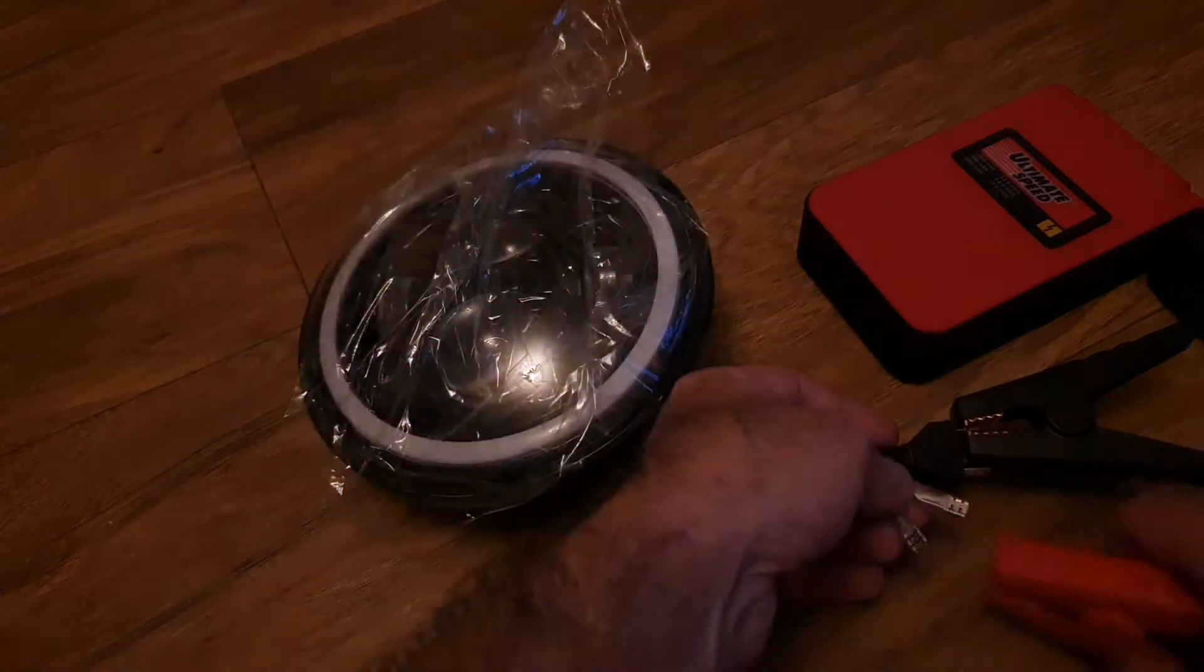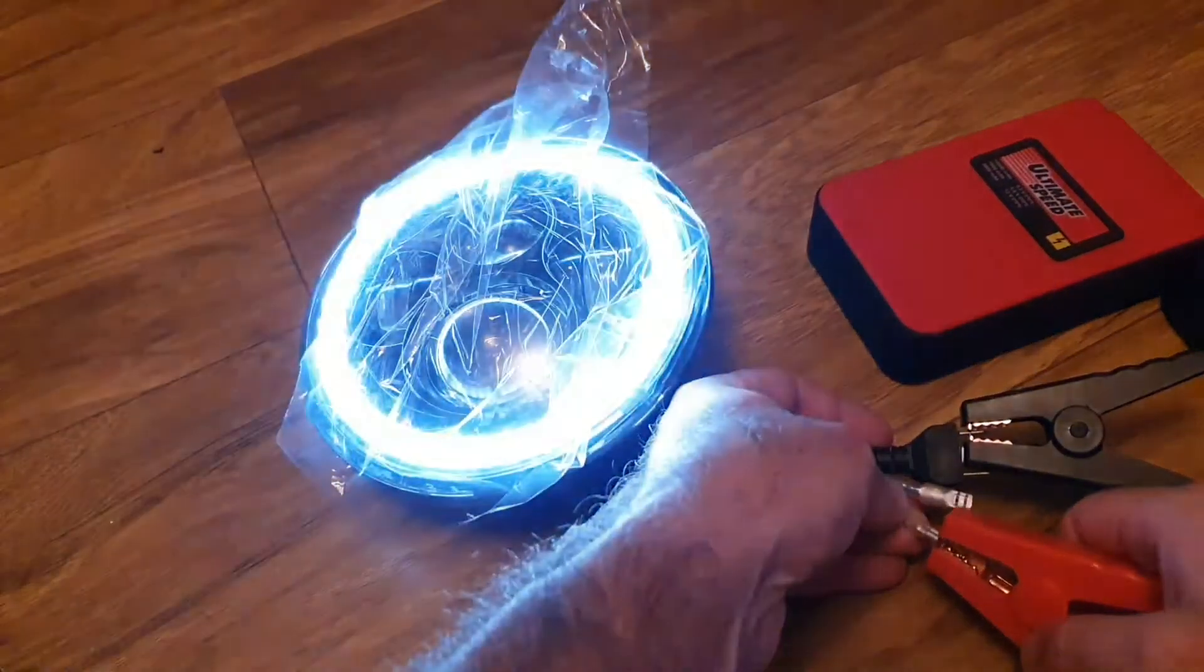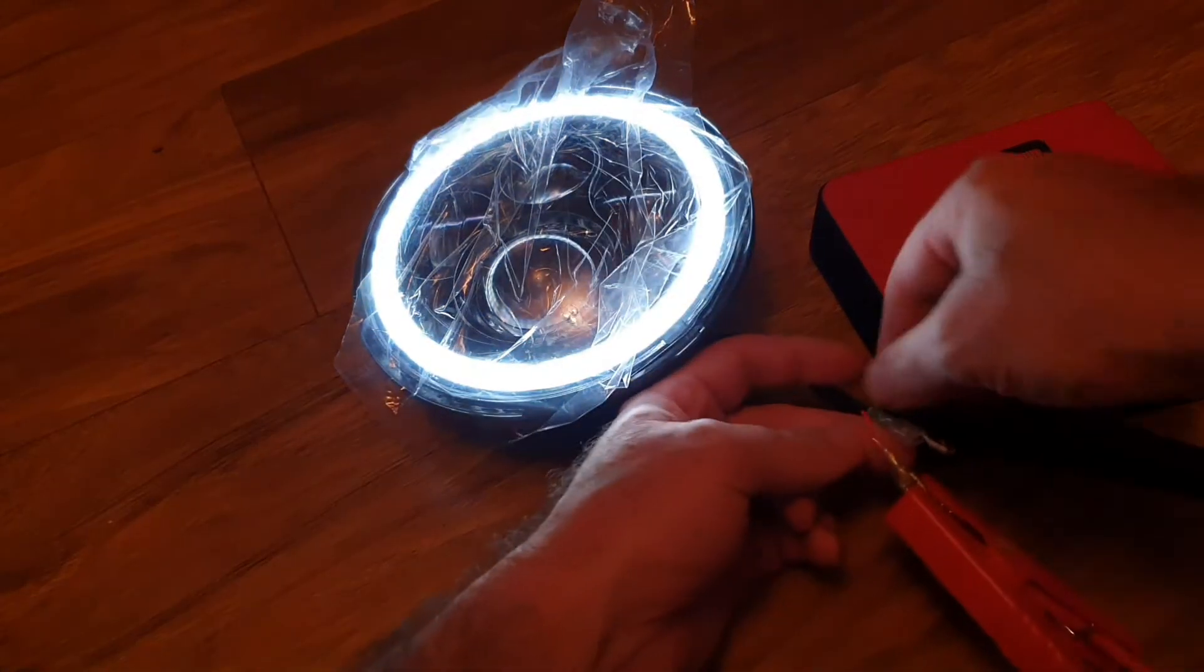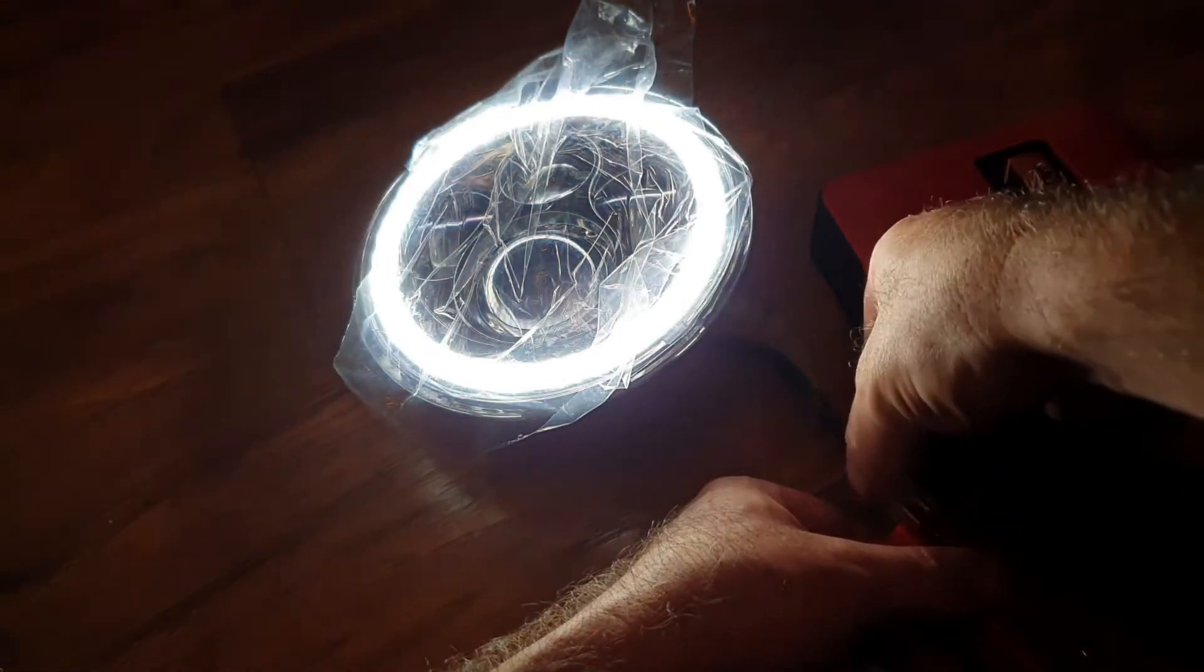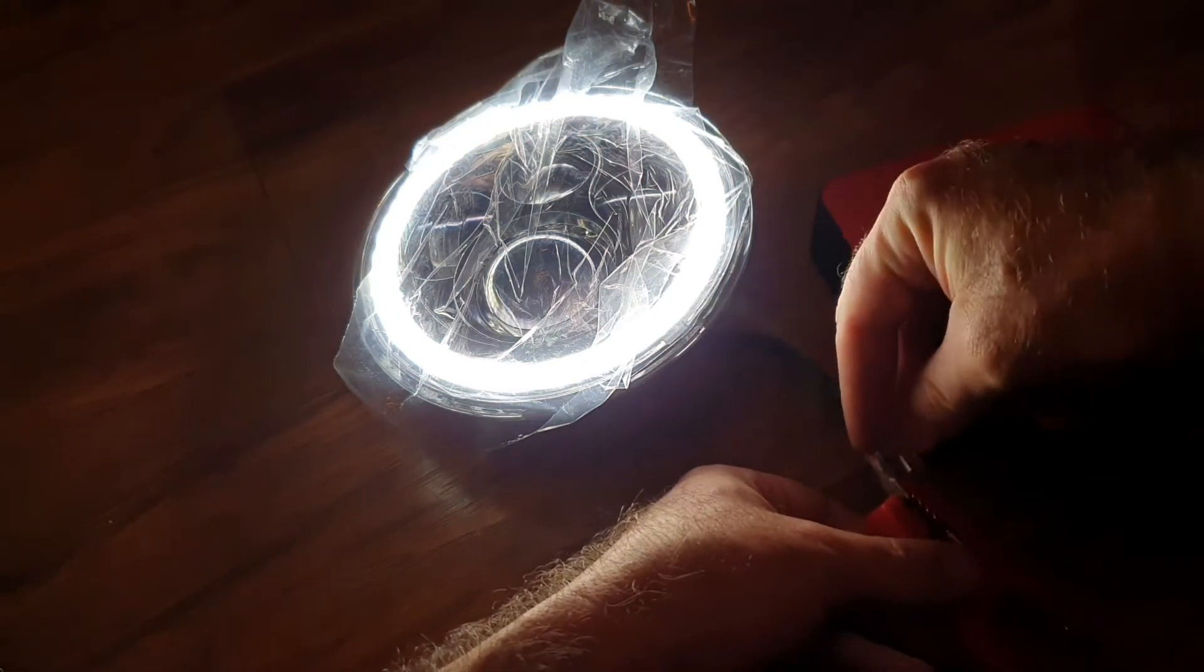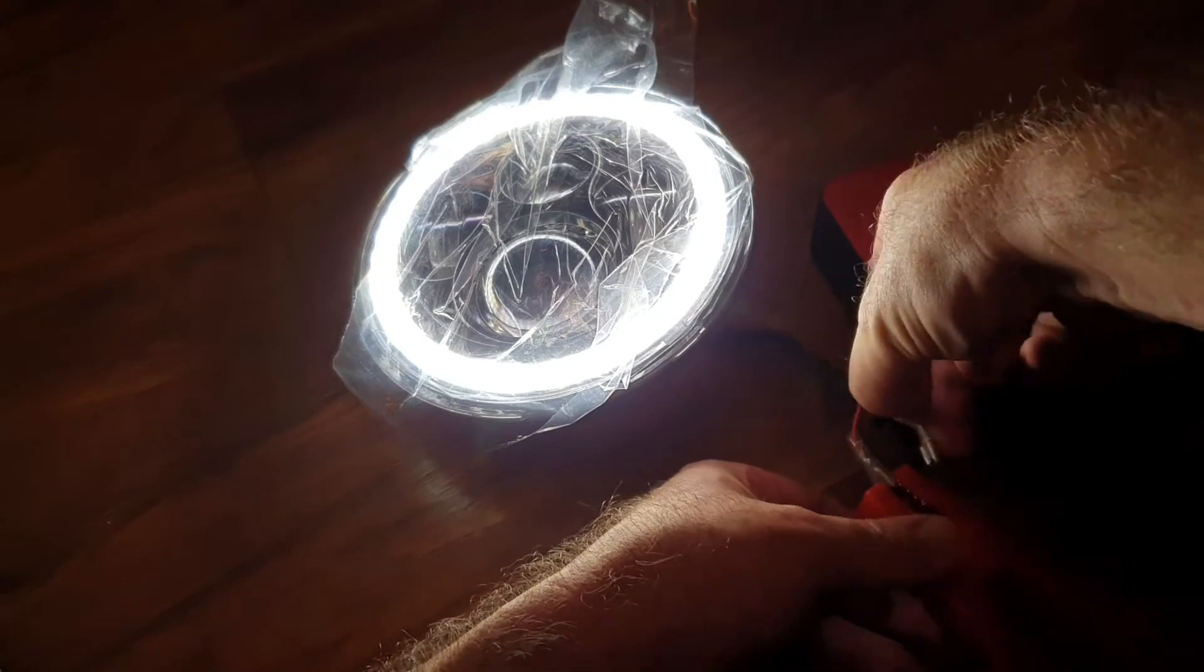As you can see, the main headlight is powered by a standard H4 plug and the little ring part is powered by these two female spade connectors. I'll have to make some extensions that I can plug into these and then splice to the side light and the indicator light wiring in the car.